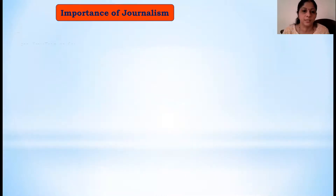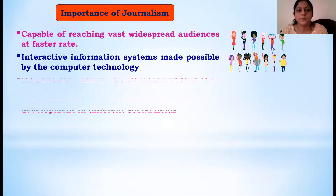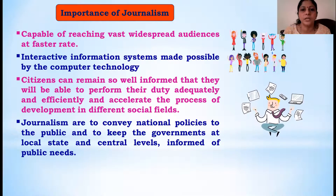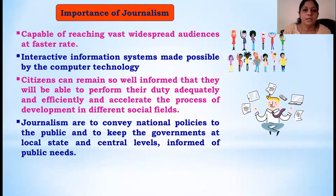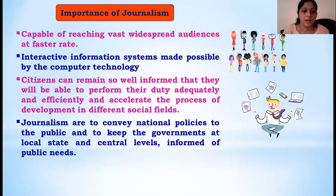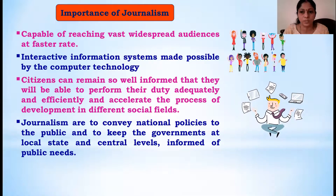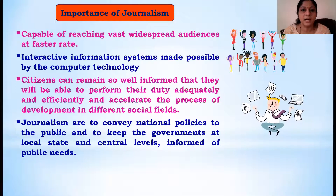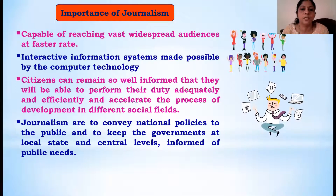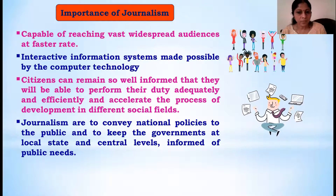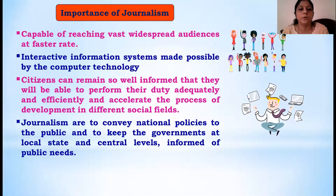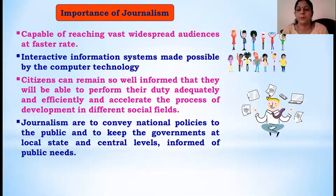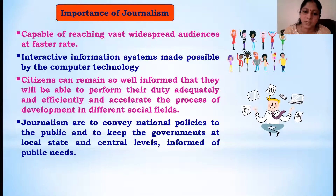Now we will see what are the importance of journalism. The first thing is it is capable of reaching a widespread audience in a short period of time. The major advantage of journalism is we can disseminate information to a large number of people in a short period of time without distorting the actual meaning of the information. And the next one is the interactive information system made possible through computer technology - using new information technology, information may be made interactive through phone-in programs, panel discussions, and live channels where you can give comments. This journalism is very important to keep people informed about what is happening around them and the duties they have to perform.